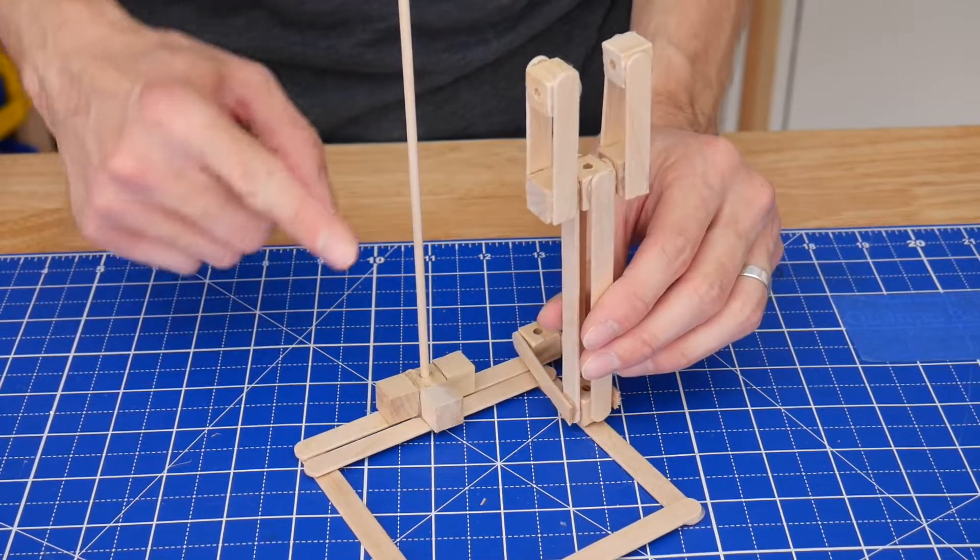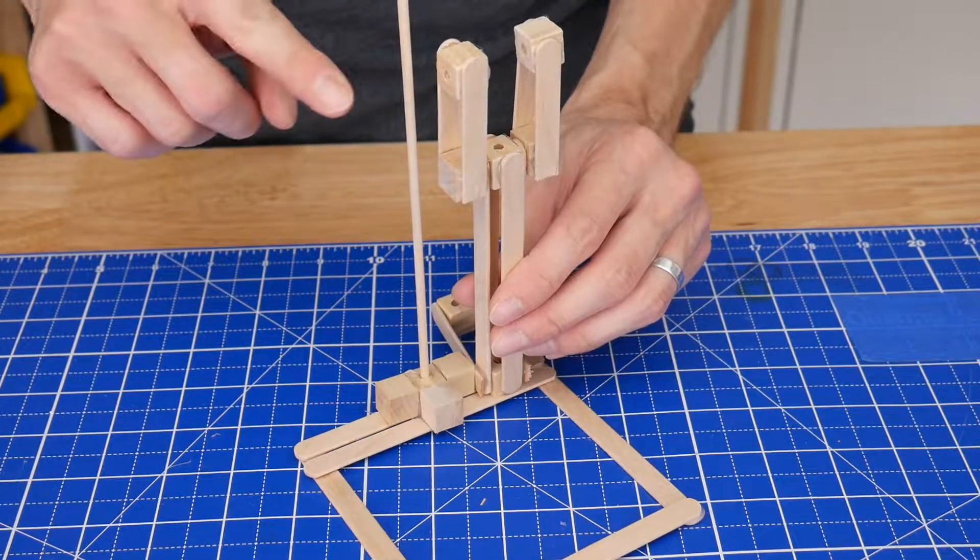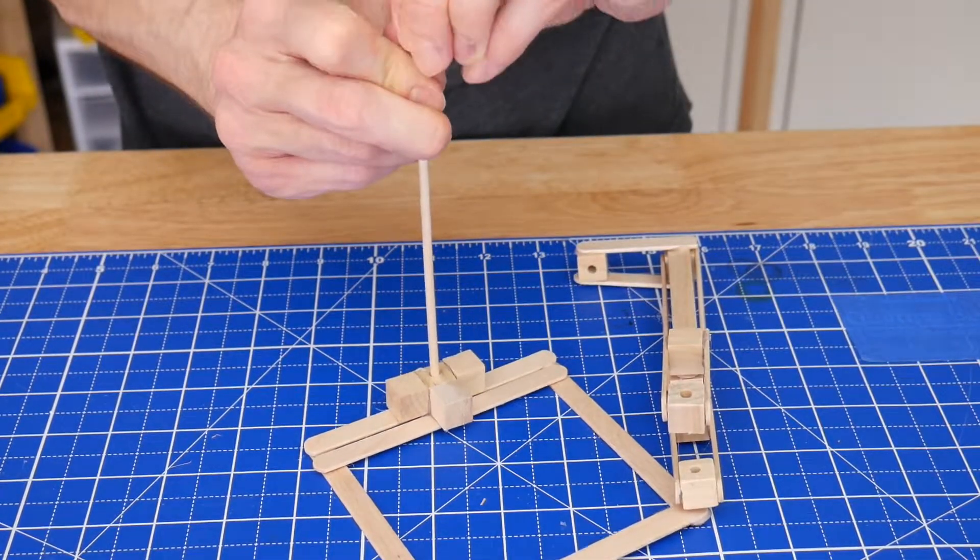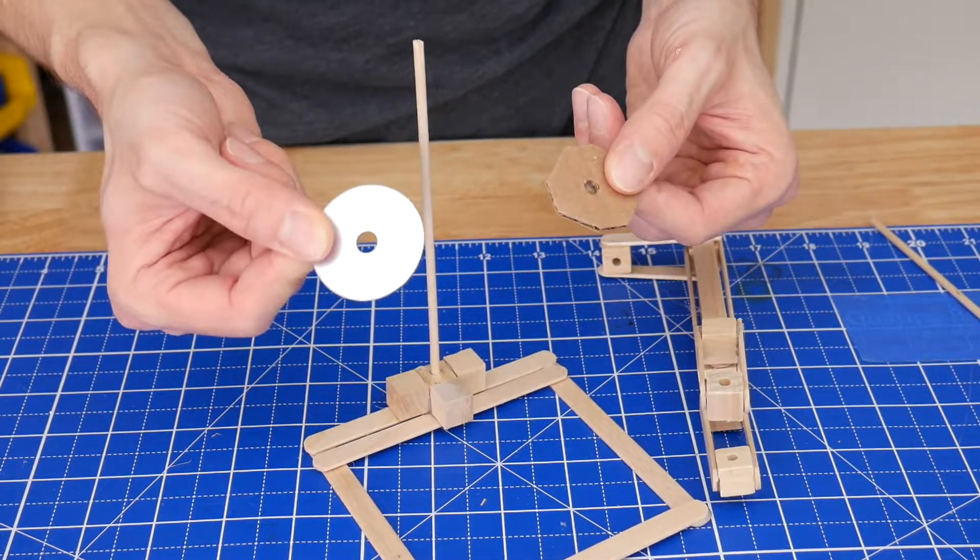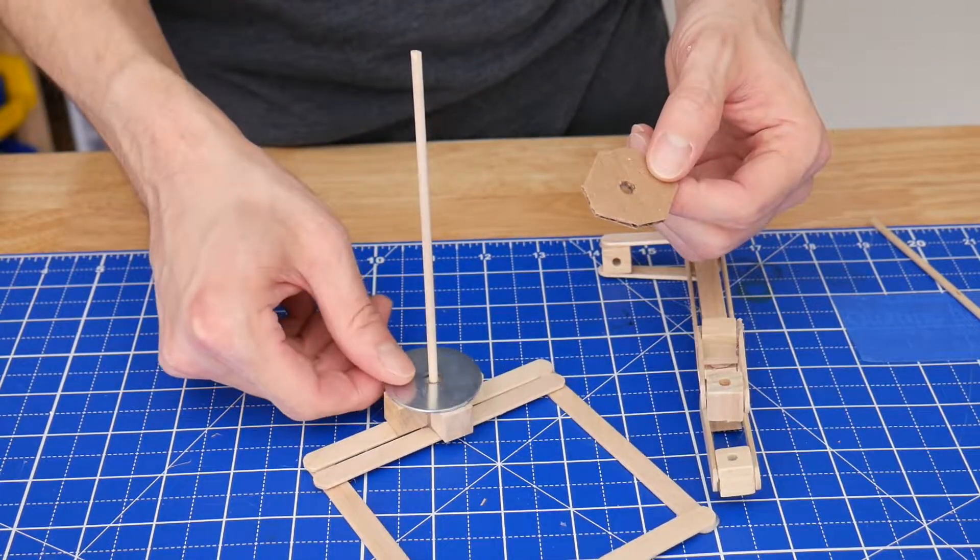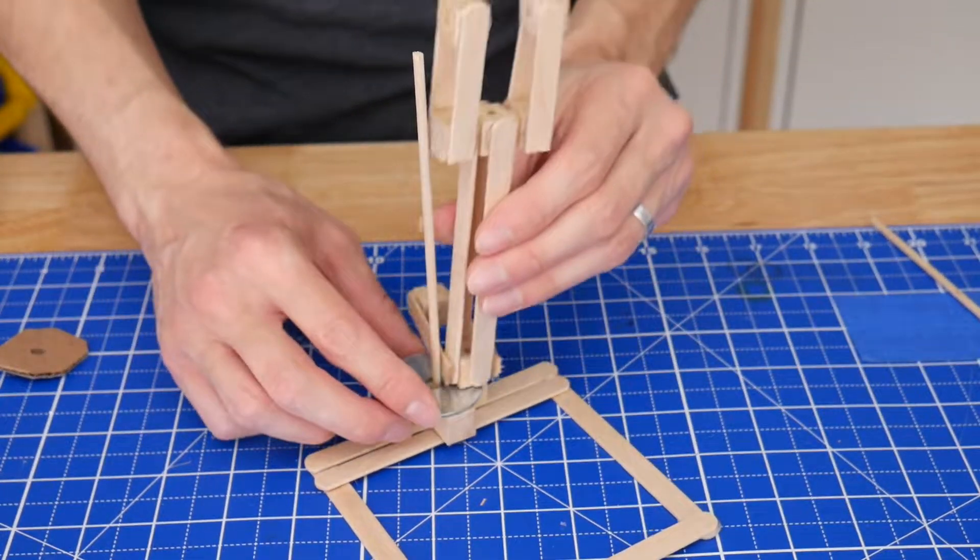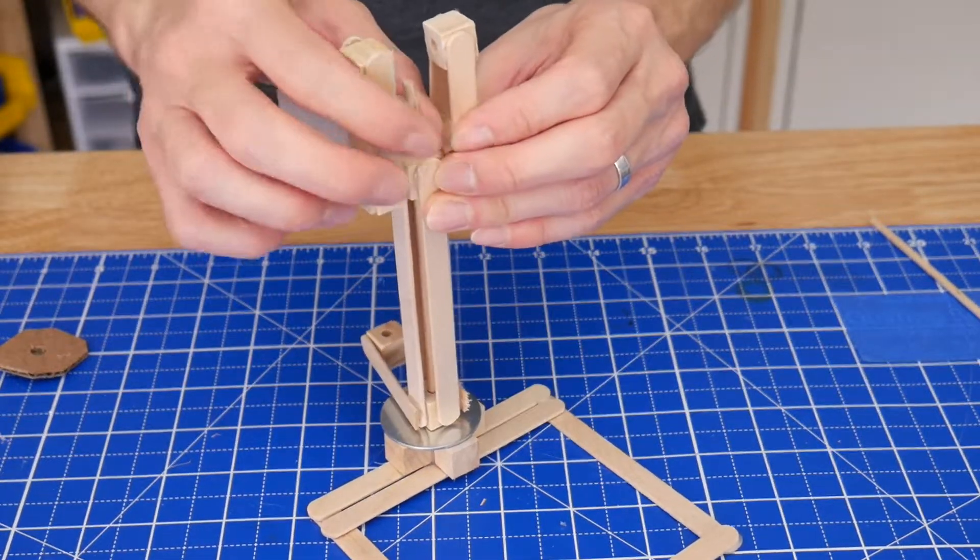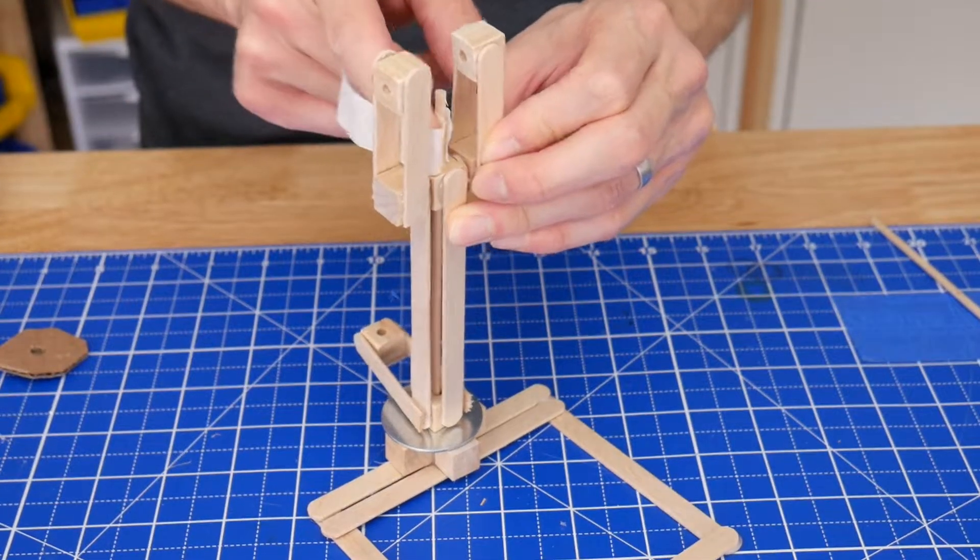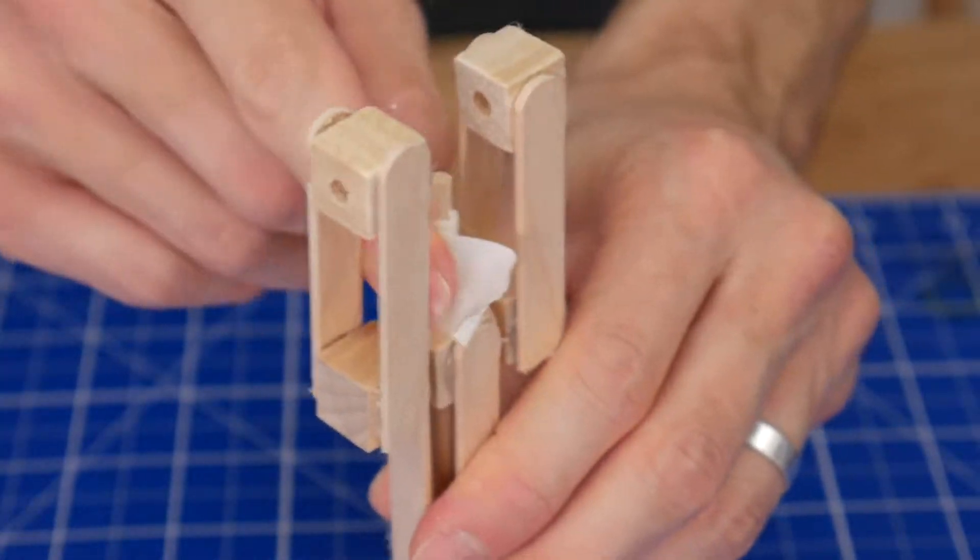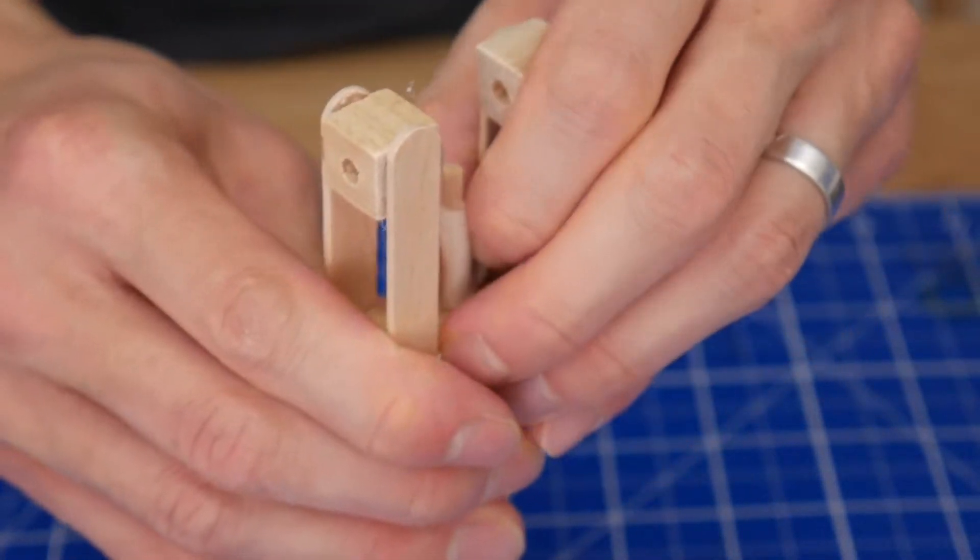Now we're going to put the pivot column onto the base. First cut or break this dowel so that it's about the same height as the pivot column. Then put a washer or a scrap of thin cardboard that has a hole in it onto the dowel here. This is going to help reduce friction between the pivot column and the base. Now put this part onto the base and wrap some tape around the dowel here so that it's too thick to slip back through the cube.